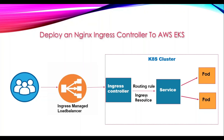We specify the hostname, path, and everything in the ingress resource. Once the traffic comes from the ingress controller, it uses those rules to reach the appropriate service. The service then locates the pods running our application and forwards the traffic to them. Once routed to the target port, the request is processed and sent back through the same path to the client, who receives whatever was requested. This flow demonstrates how ingress controllers facilitate efficient routing of external traffic to specific services and pods within your AWS EKS cluster.